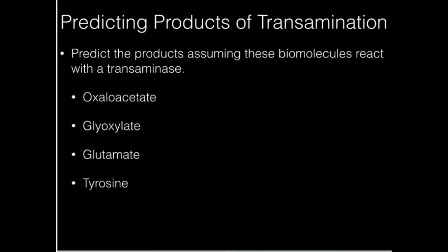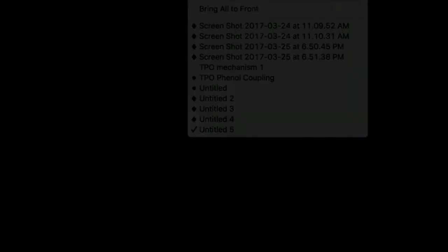So what was the first one? Oxaloacetate. Let's draw oxaloacetate. Oxaloacetate looks like this. And we want to react it with a transaminase. What would the product look like?